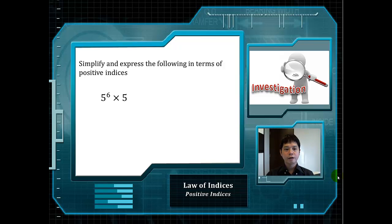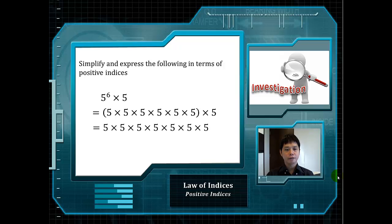Another example: 5 to the power of 6 multiplied by 5. Can you guess what the answer is? We will rewrite 5 to the power of 6 in this way. And the final answer is 5 to the power of 7, because we multiplied 5 here 7 times.